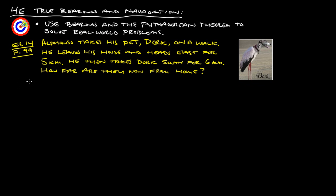I would highly suggest drawing a picture. So let's start with this here. Here's true north, and east, south, and west. Takes him on a walk, leaves his house, and heads east. So let's say that this right here is his house. He heads east for five kilometers. So he's heading this way for five kilometers. Let's call this five kilometers. Then he takes dork south for six kilometers. So then we go south, right here, for six kilometers. How far are they from home? We want to figure out what this measurement here is. So we'll call that x. That's what we're trying to figure out.